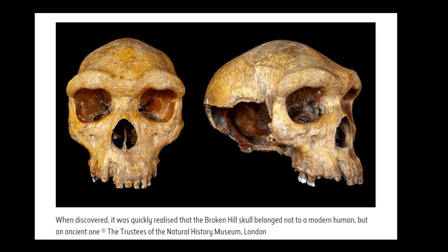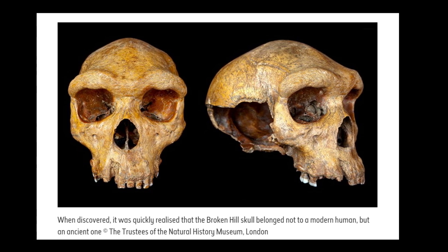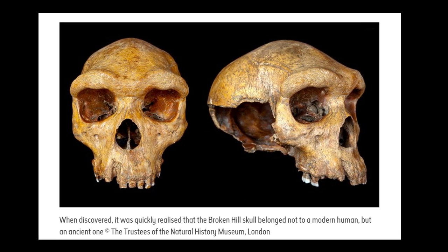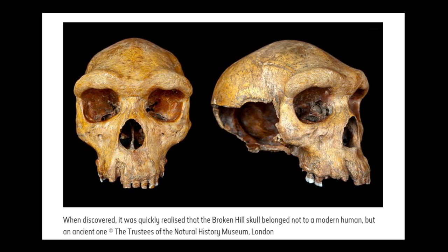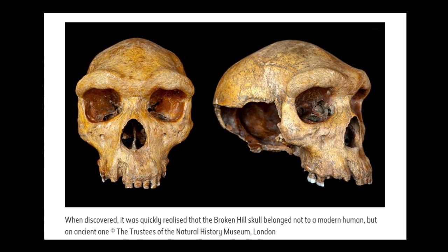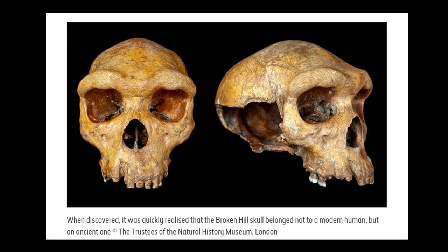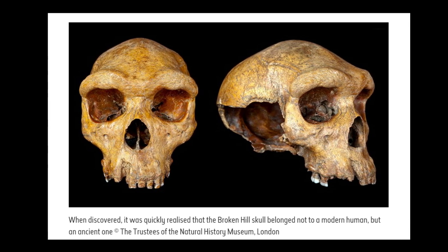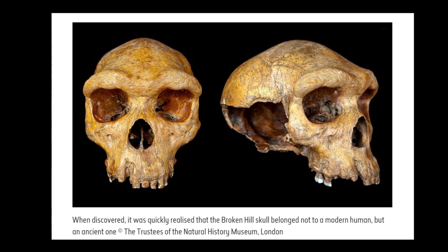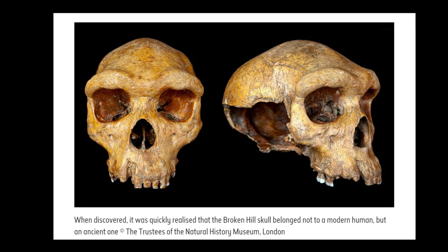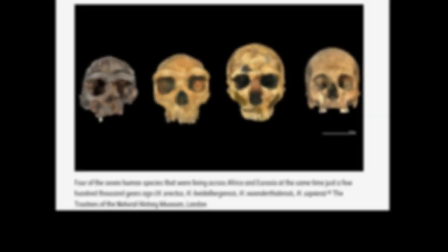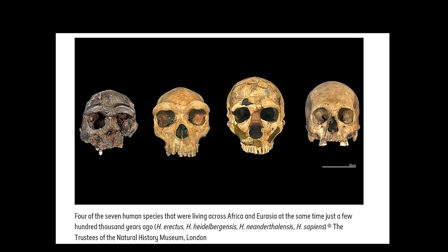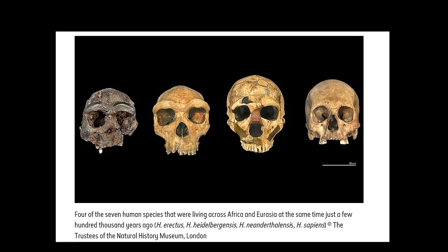We know humans had an ancestor with Neanderthals, but what did he or she look like? And how do we know the scarce fossil fragments we find are indeed from this ancestor population? These ambiguities give rise to many conflicts in human evolution.